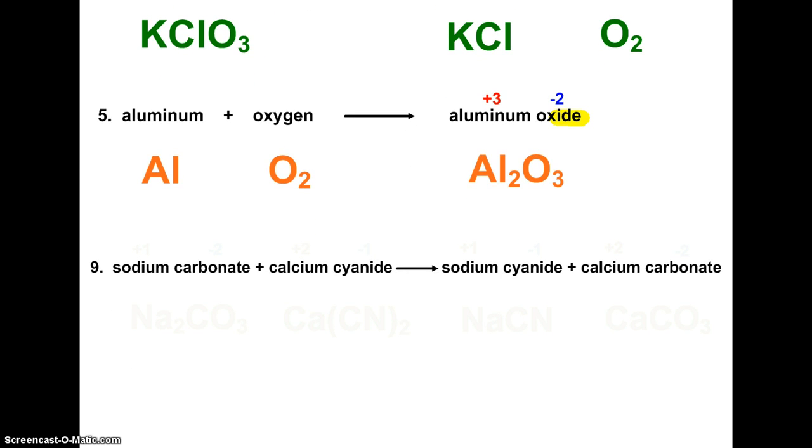Number nine: sodium carbonate plus calcium cyanide makes sodium cyanide and calcium carbonate. Sodium in group one is a plus one ion. Carbonate, a polyatomic ion which I'm sure you have memorized, is CO3 minus two. So I'm going to need two sodiums and one carbonate.